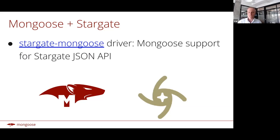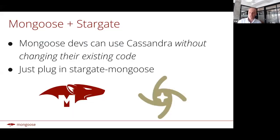Specifically, there is a new Stargate Mongoose driver. So what does that mean? That means that Mongoose devs can now start using Cassandra without changing their existing code, or with minimal changes to their existing code. Just plug in Stargate Mongoose and all of a sudden your Mongoose code can start writing data to Cassandra and loading data from Cassandra via the Stargate JSON API.